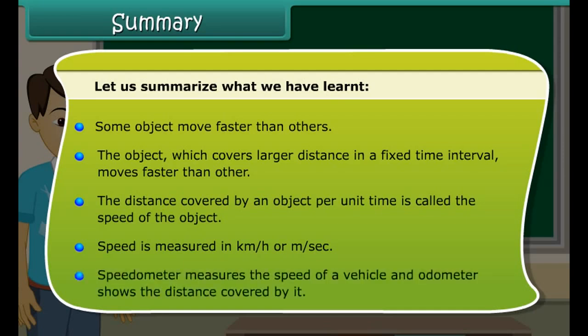Let us summarize what we have learned. Some objects move faster than others. The object which covers a larger distance in a fixed time interval moves faster than others. The distance covered by an object per unit time is called the speed of the object. Speed is measured in kilometer per hour or meter per second. Speedometer measures the speed of a vehicle and odometer shows the distance covered by it.